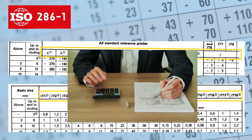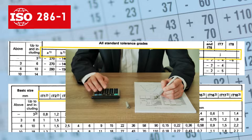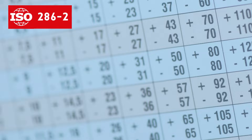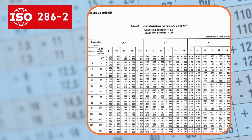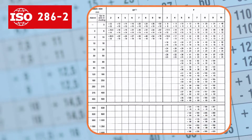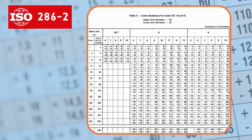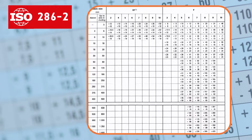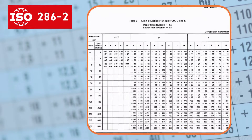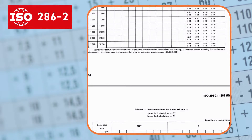However, calculations are needed to obtain the limits, depending on the required tolerance class, basic size, and feature type. ISO 286-2 is a collection of dozens of charts that tabulate the size limits for the commonly used tolerance grades per basic sizes. It is based on ISO 286-1. If the tolerance grade you need is listed, you will need fewer calculations to obtain the final results.